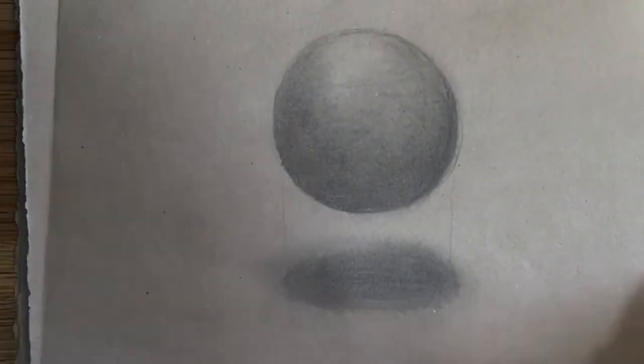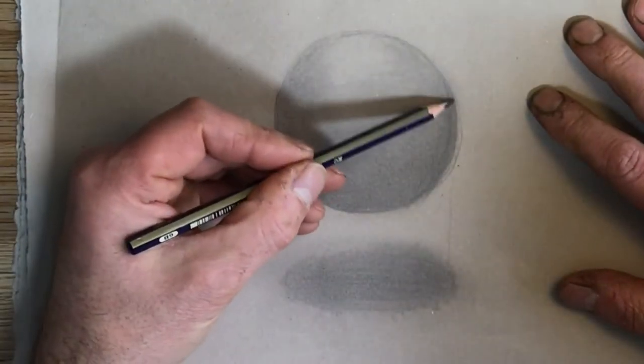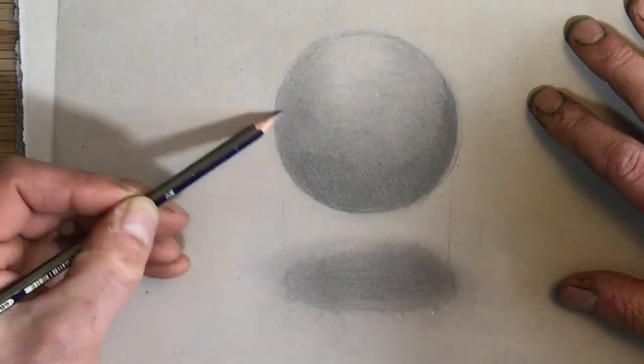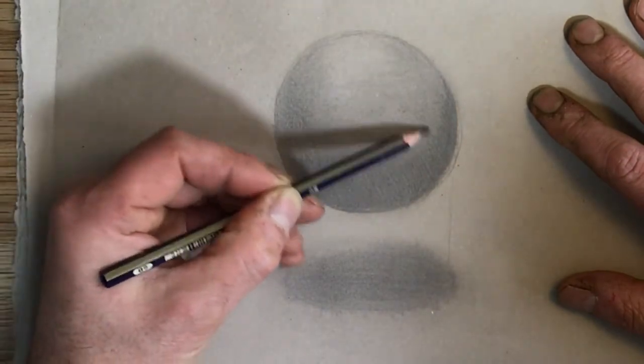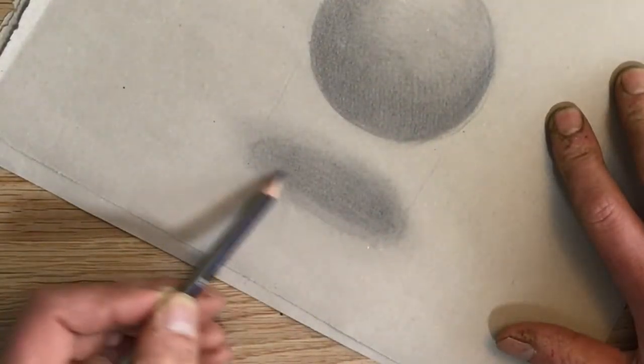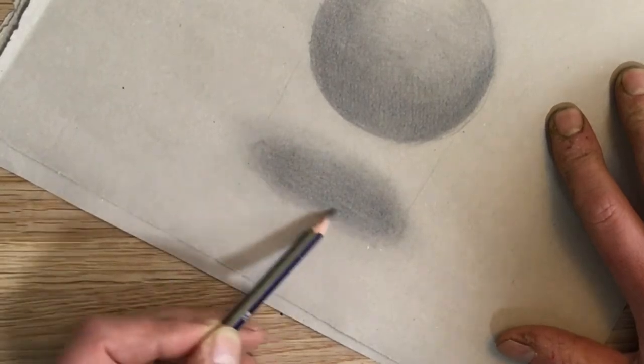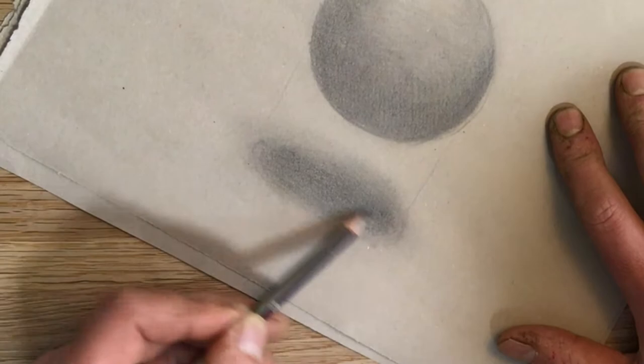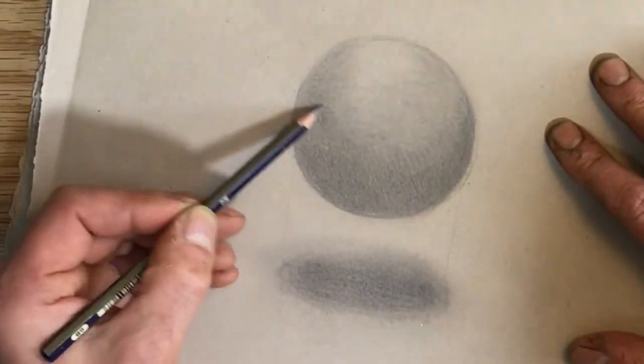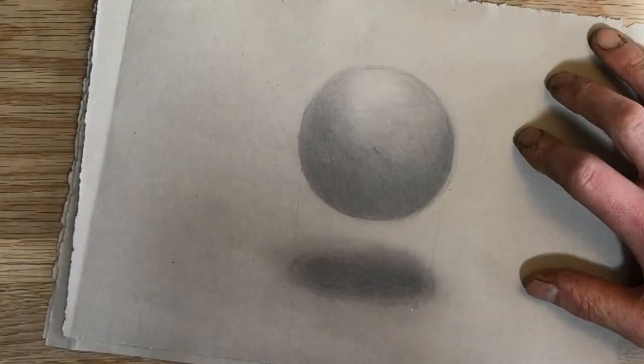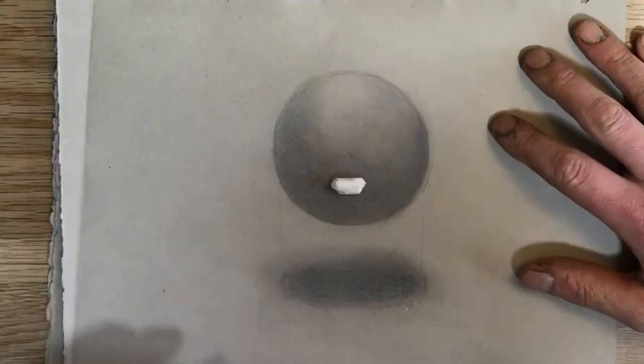Okay, another layer of tone on my darkest areas. So just on the underneath of the ball there. Creeping up around the sides. A little more depth in the cast shadow. And we're almost ready to introduce something that is going to completely change the atmosphere and the way you think about your drawing.